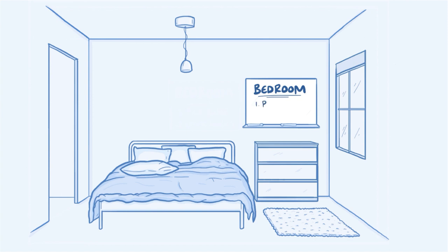Next, you can start identifying specific spots called loci in that place. It's nice to pick really distinct spots, and in this case we'll pick out 6 spots because there are 6 things to remember. Let's go with the bed, the window, the doorway, the dresser, the rug, and the ceiling light.